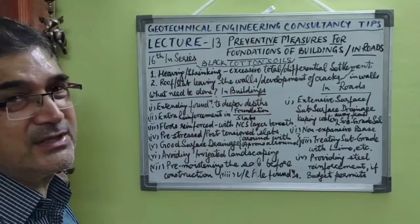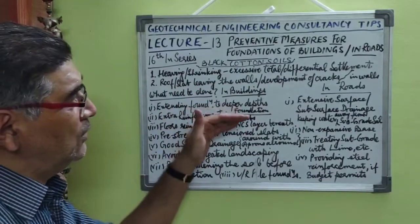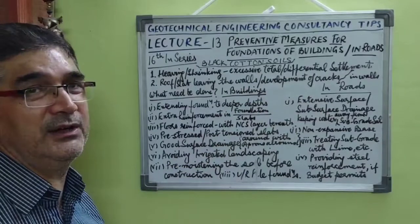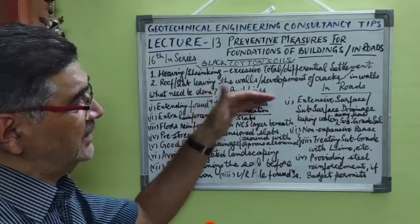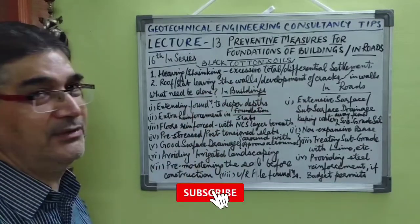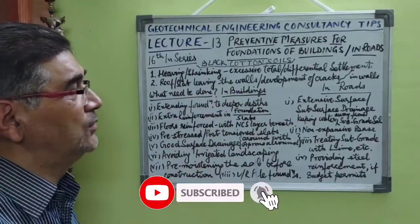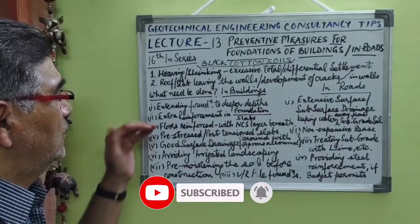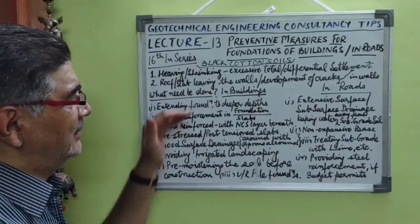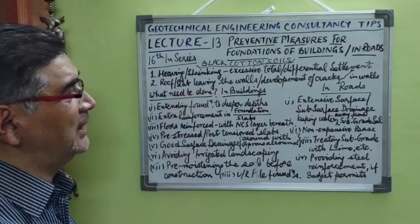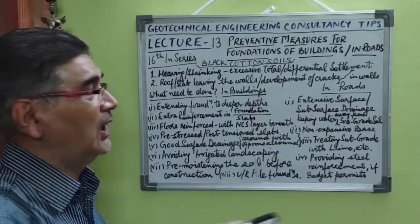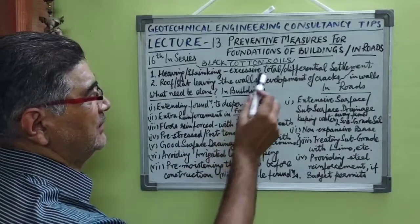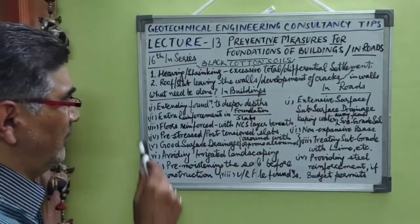Although lightly loaded structures may not fail in the near future, they tend to behave differently and their aesthetic view is disturbed. So what needs to be done in buildings so as to avoid these detrimental effects of black cotton soils?